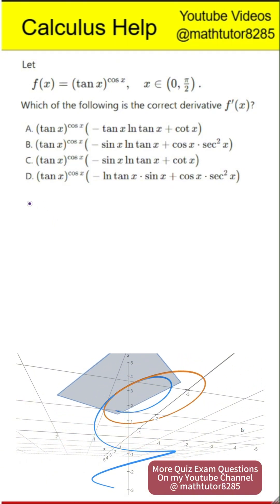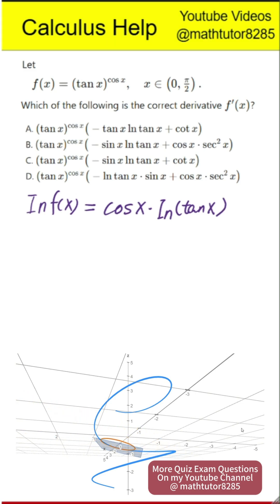First step, we start by taking logarithms to simplify. We rewrite the function by saying the natural log of f of x equals cosine x multiplied by the natural log of tangent x. Key idea: when both the base and the exponent involve x, logarithmic differentiation is the most effective approach.